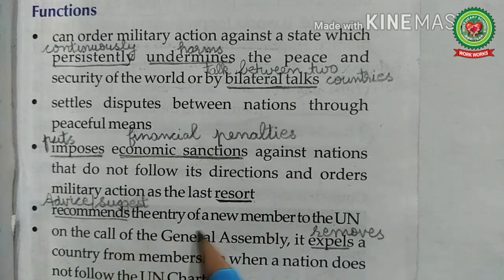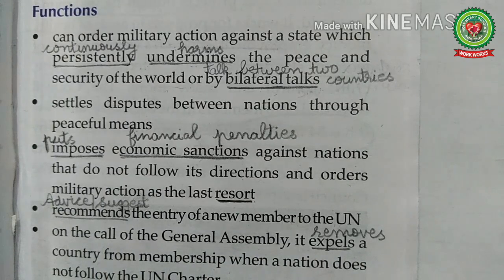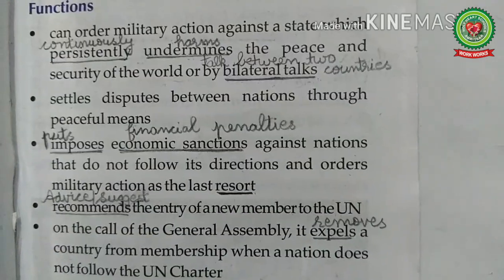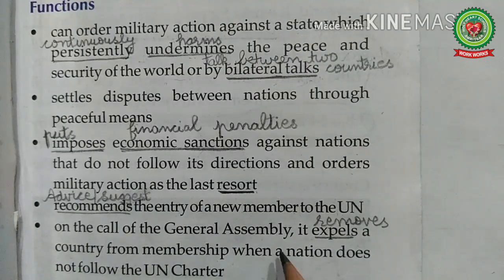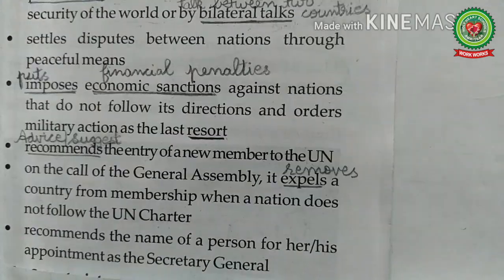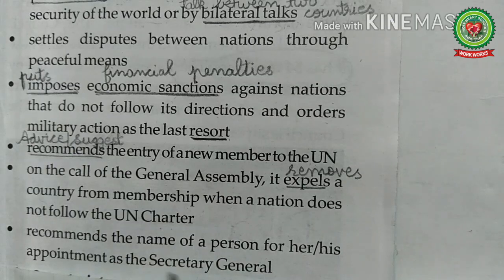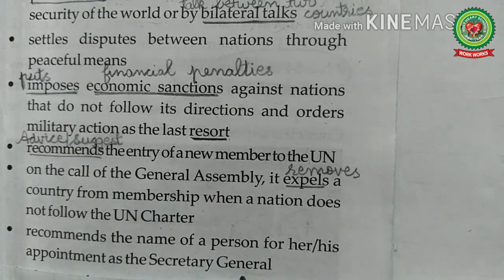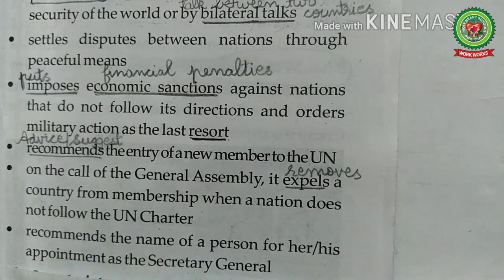Next function: recommends the entry of a new member of the United Nations — recommends means to advise or suggest. Next: on the call of the General Assembly, it expels a country from membership when a nation does not follow the UN Charter — if a country is not working according to the UN Charter, the Security Council can remove that country from membership. Last function: recommends the name of a person for appointment as Secretary General. In conclusion, the foremost responsibility of the Security Council is to maintain peace and security in the world.